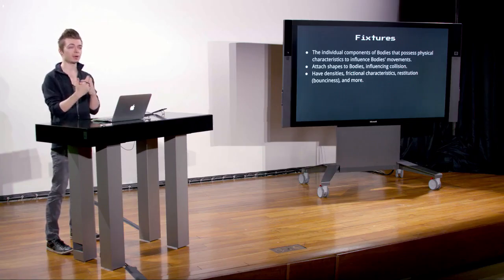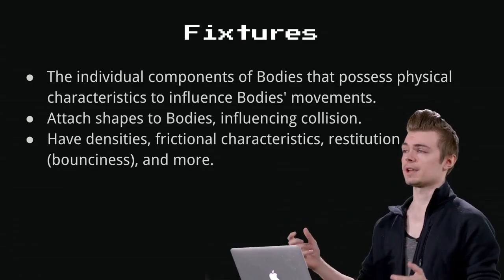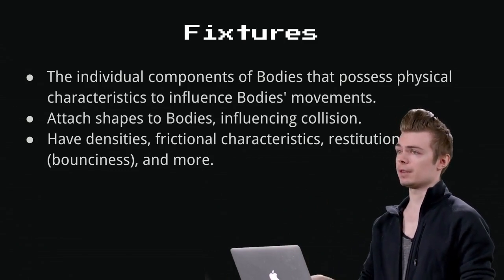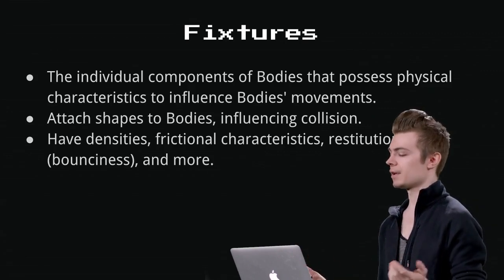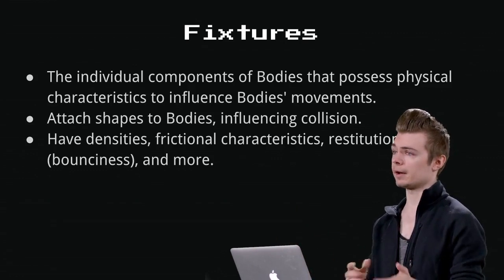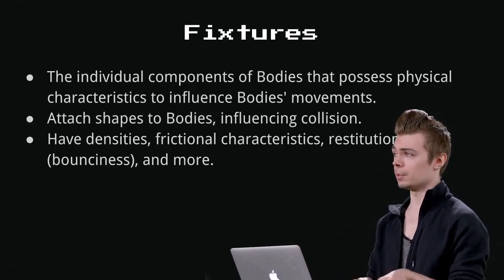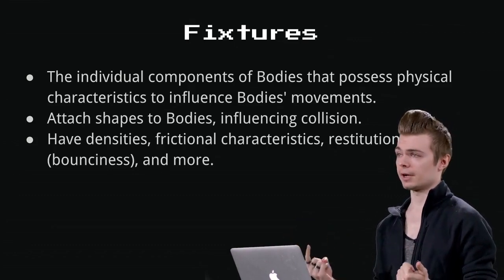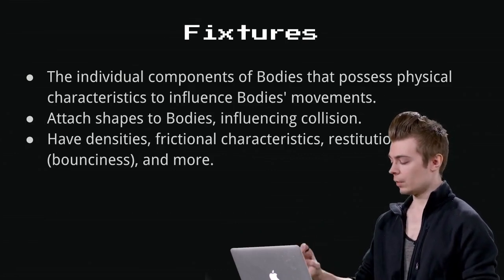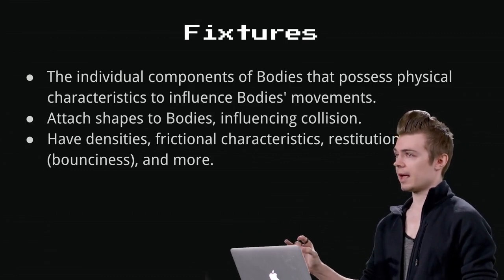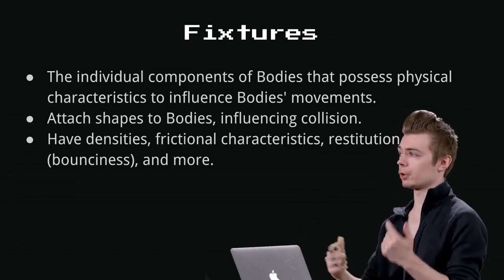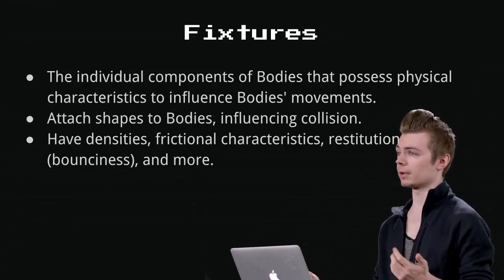The last key ingredient for creating interactions between bodies are fixtures. A fixture is an abstract object that lets you attach a shape to a body. Bodies are shapeless by default — just a container with position and velocity. They don't interact with anything until you give them a fixture. The fixture gives the body a shape: for example, if we want the round alien bird, we create a body and attach a circle-shape fixture. Box2D will then know it should interact with things as a circle, triggering circular hitbox collisions.